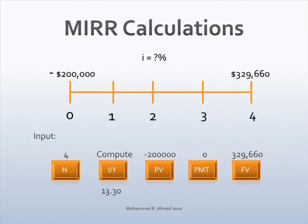The initial investment is $200,000 and the investment generated a future value of $329,660 in four years. The question is: at what rate will $200,000 grow to $329,660 in four years? Enter into the calculator: 4N, $200,000 plus/minus PV, zero payments, $329,660 FV, and compute interest. MIRR is 13.3%. This means investing $200,000 in the project will generate a 13.3% rate of return if the cash flows are reinvested at the cost of capital.